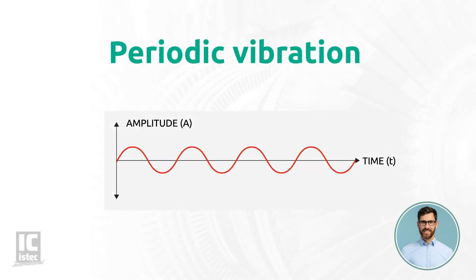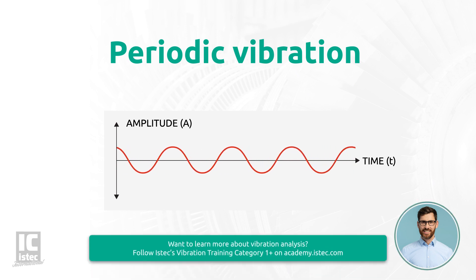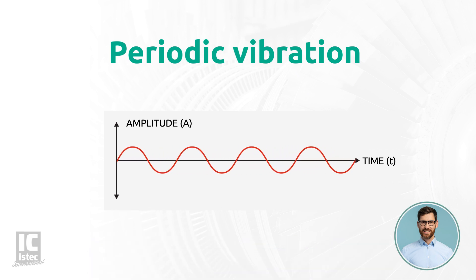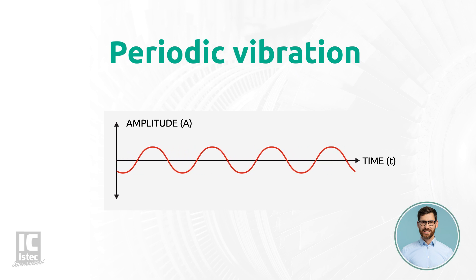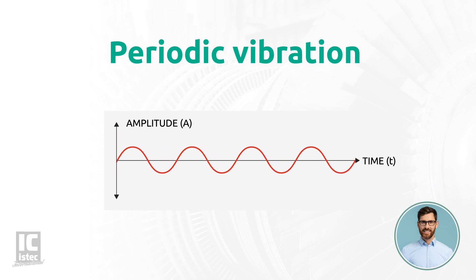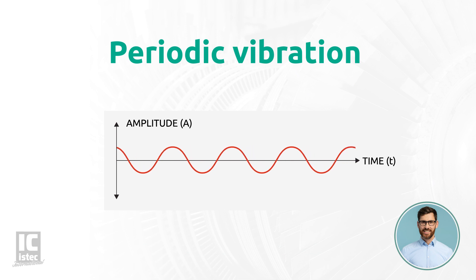The basic form of a periodic vibration is the pure harmonic vibration, which is a single continuous vibration characterized by a single sinusoidal waveform. The amplitude of the vibration depends on the excitation force, while the frequency depends on the stiffness of the spring and the vibrating mass, or rotating speed indicated in RPM. Pure harmonic vibration signals are rarely seen in industrial equipment, only in very basic machines or test setups with perfect conditions.